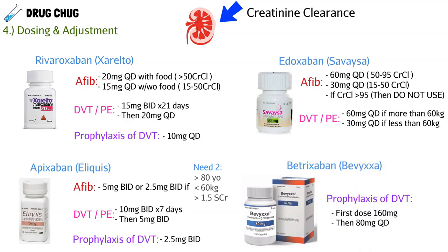The final drug is betrixaban (Bevyxxa). It only has a prophylaxis dose for DVT and is the simplest: a first dose of 160 mg, then 80 mg daily after that. This dosing section was by far the hardest part of the video — in a hospital setting, work with your team and talk to your pharmacist.